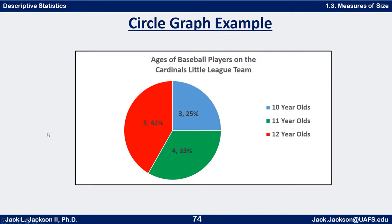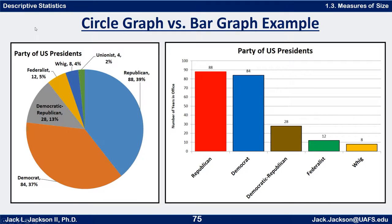Here's another example. We looked at this bar graph in our last video — ages of baseball players on the Cardinals little league team, just made up. Here we have a legend off to the right by color: 10 year olds, 11 year olds, 12 year olds, with both frequencies and relative frequencies. This works really nicely as a circle chart because there are only three wedges and we can see the relative sizes of each group. Here's the same information about the parties of the US presidents represented in a Pareto-style histogram — a bar graph in decreasing order of frequency.